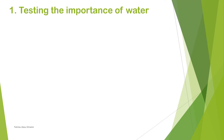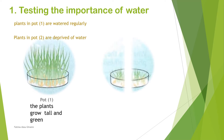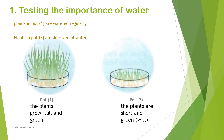Testing the importance of water. We have two pots, one and two. The plants in pot one are watered regularly — those plants grow tall and green. The plants in pot two are deprived of water, and these plants are short and yellow. Plants in pot one have water, but plants in pot two have not received water.